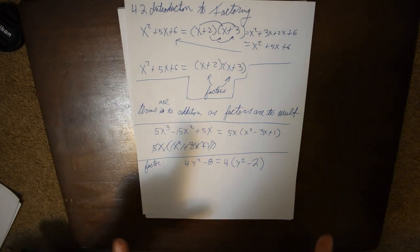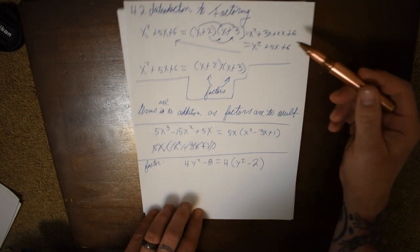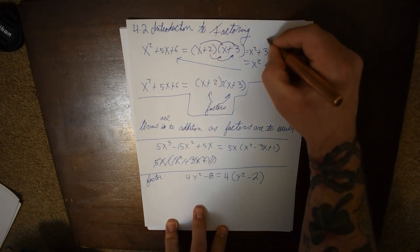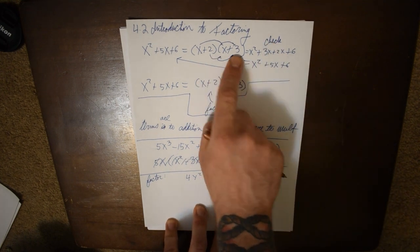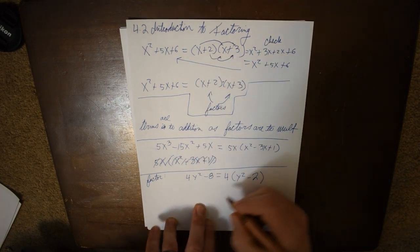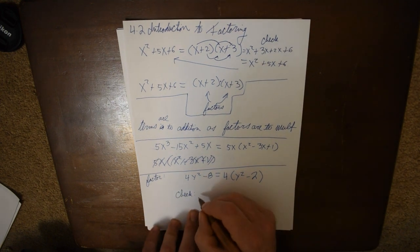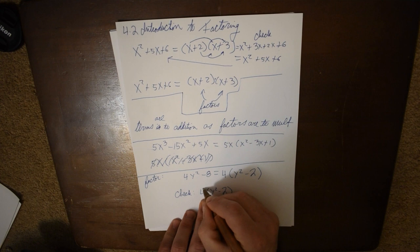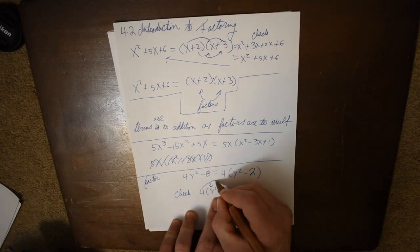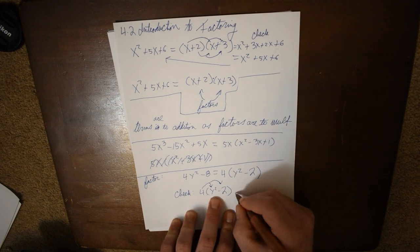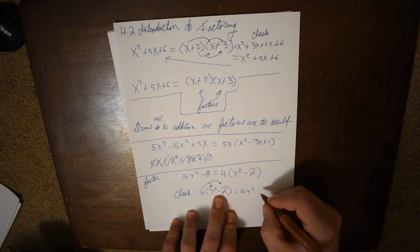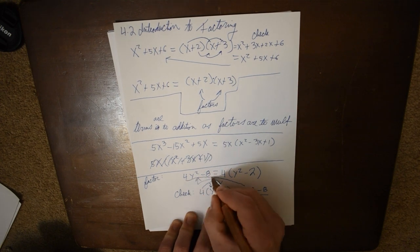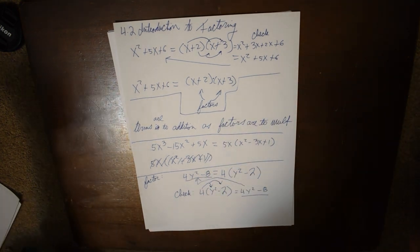How do you know if you've done these correctly? You can go backwards — just like we did way up here. We can check by multiplying the factors together. If we distribute 4 times the quantity y squared minus 2, we get 4 times y squared equals 4y squared, and 4 times negative 2 equals negative 8. You want these two to match. Factors are equivalent statements; they just look a little different.